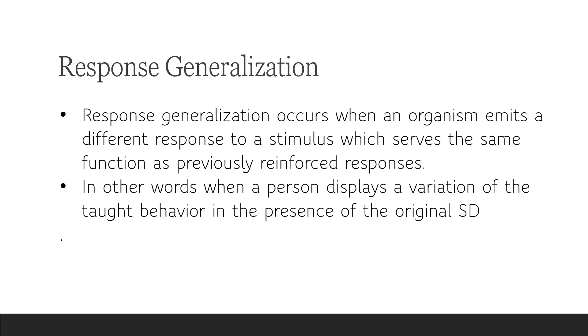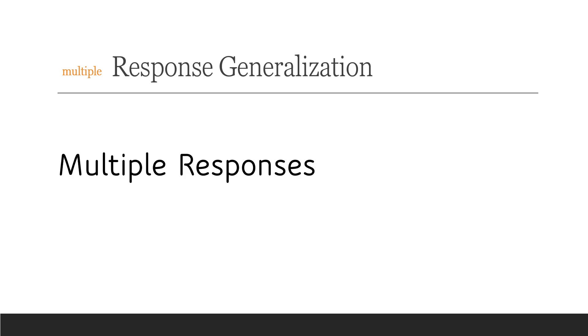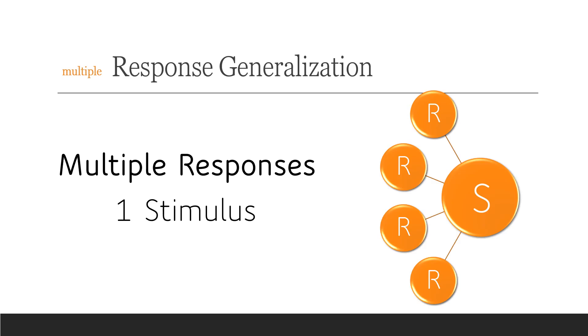Now it's time for response generalization. Response generalization occurs when an organism emits a different response to a stimulus, which serves the same function as previously reinforced responses — in other words, when a person displays a variation of the taught behavior in the presence of the original SD. Again, definitions alone aren't enough. We're going to use the same trick: add 'multiple' in front, so it reads 'multiple response generalization' — multiple responses and only one stimulus. Here's the chart; always try to draw that chart when you have a word problem to work through — it's really helpful.